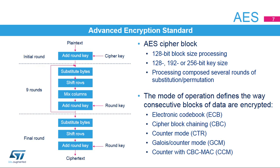Advanced Encryption Standard works on a block of 128 bits. Encryption or decryption can be done using a key of 128, 192, or 256 bits. A full block operation is composed of several rounds of substitution and permutation. The diagram shows the operations for an AES encryption using a 128-bit key. Successive blocks can be chained following several operating modes, described in the next slides.